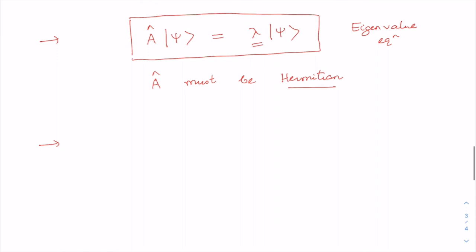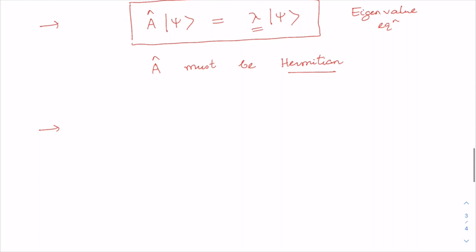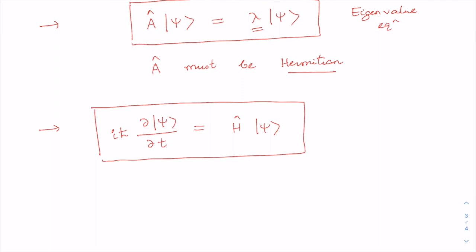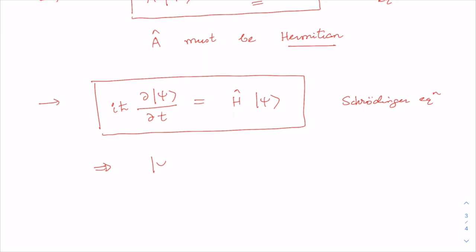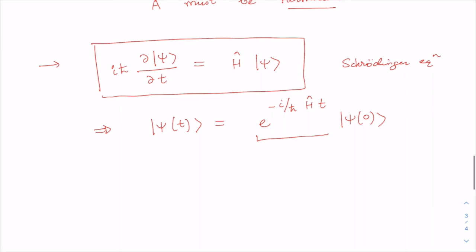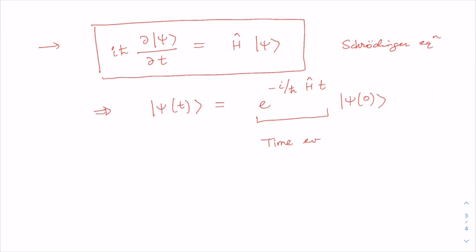Another important postulate states that the time evolution of the state vector |ψ⟩ is given by the Schrödinger equation. From the Schrödinger equation, one can immediately write that the state vector at an arbitrary time t is |ψ(t)⟩ = e^(−iĤt/ℏ)|ψ(0)⟩. This particular operator e^(−iĤt/ℏ) is known as the time evolution operator.